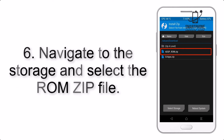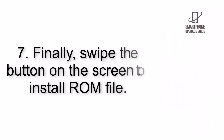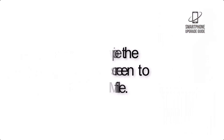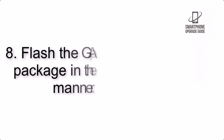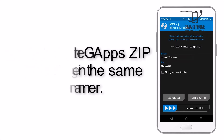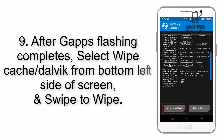Step 6: Navigate to the storage and select the ROM zip file. Step 7: Finally, swipe the button on the screen to install the ROM file. Step 8: Flash the GApps zip package in the same manner.